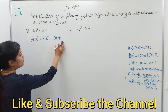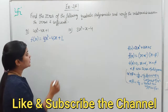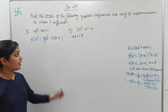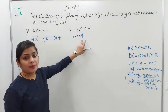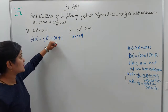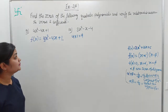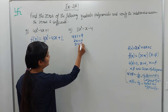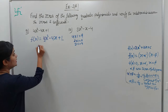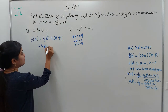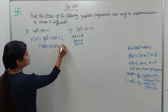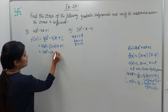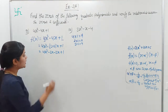So, 1 times 4 is 4. We need to factor 4 such that when you multiply the two factors you get 4, and when you add them you get 4. So, 2 times 2 is 4, and 2 plus 2 is also 4. We apply this: 4x² - (2+2)x + 1. Opening the bracket: 4x² - 2x, then minus 2x + 1.